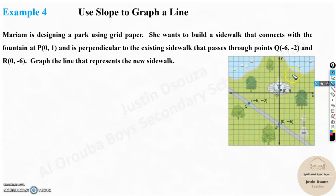So what it says is, see this is a fountain, you can see the fountain over here, a small one, at this point P of 0,1. And there is an existing sidewalk at Q and R. These are the points. And then there is a new sidewalk to be built from the fountain which touches over here which will be perpendicular.